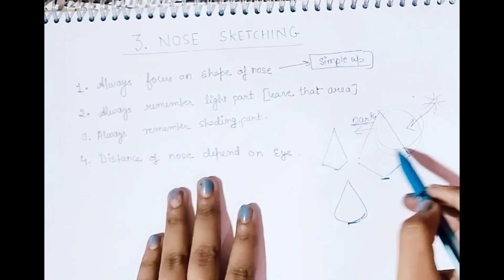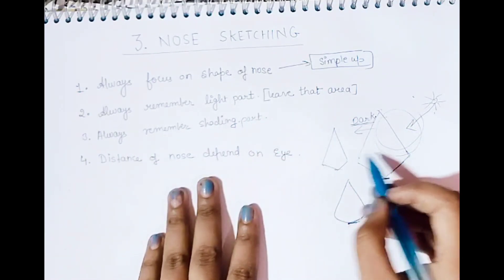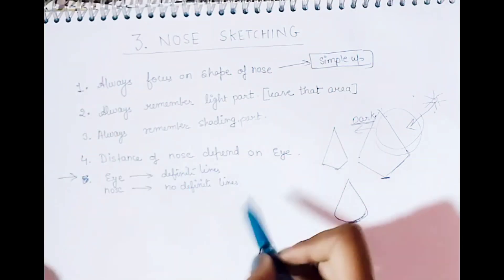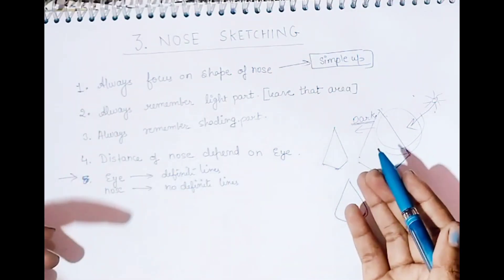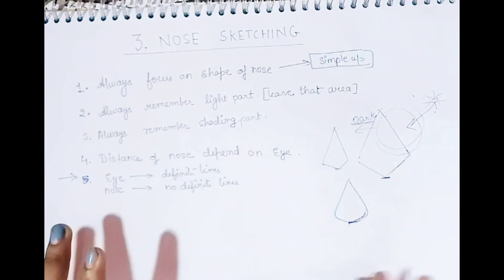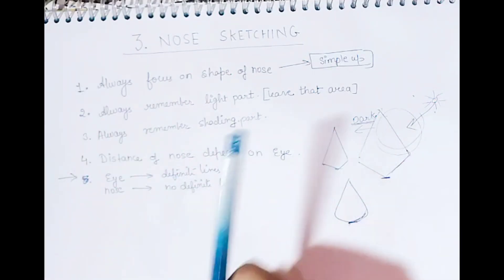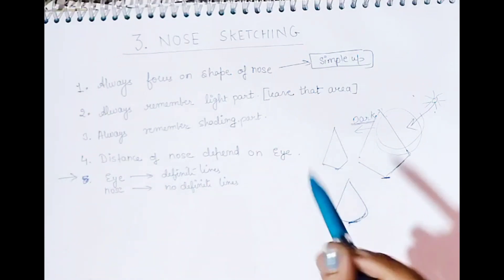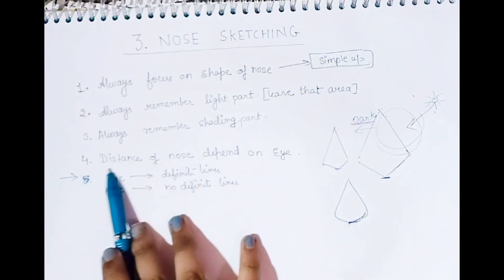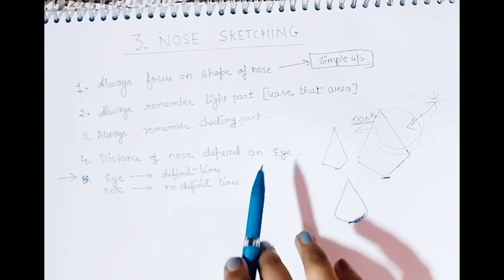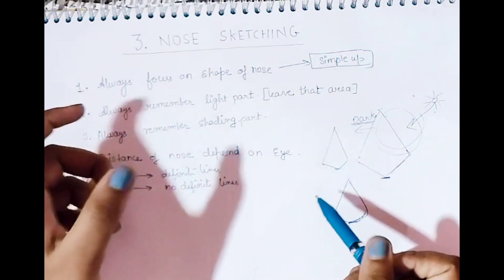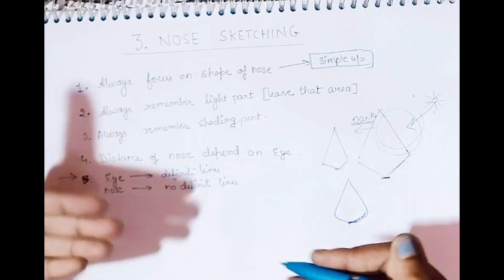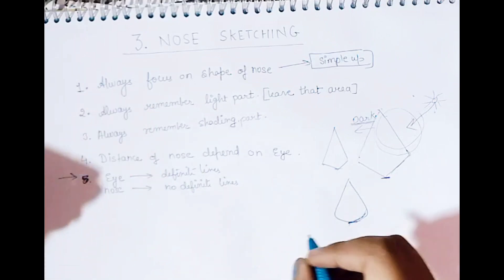The nose is typically difficult to make sometimes because we think we have to lighten some areas and darken some areas, and there's no definite rule for it. Unlike the eye where lines are definite, the nose has no definite lines — we have to create a good nose entirely with the help of shadows.